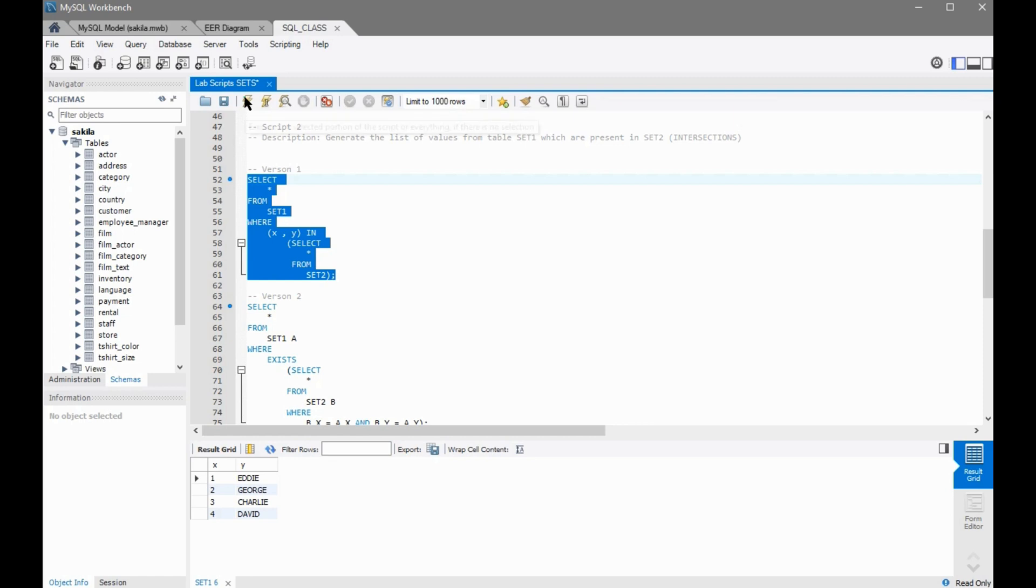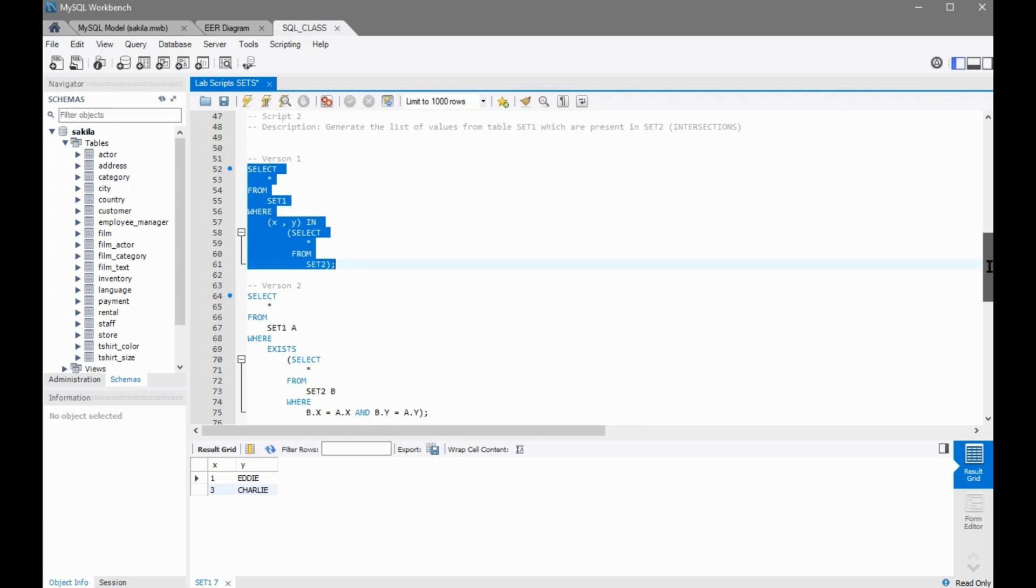Great, so we have Eddie and Charlie that comes back. We can also run the same command using the exists keyword. With exists we have to use a join condition. So we'll select star from set1, I'm giving it an alias A, where exists, open brackets select star from set2 alias B where...